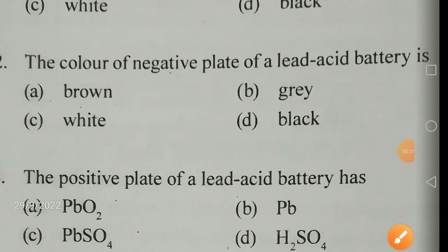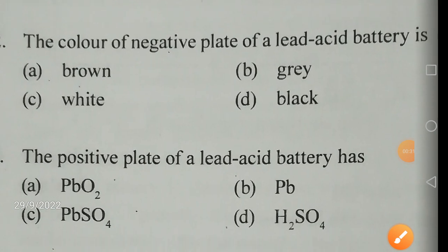The color of the negative plate of a lead acid battery — there are many types of batteries, and one of the important prime batteries is the lead acid battery, which we normally use. The color of the negative plate of a lead acid battery is gray.